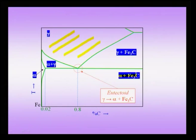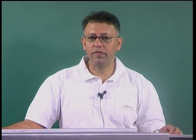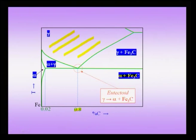Although alpha BCC is not as ductile as gamma FCC, alpha is still much more ductile than Fe3C. A eutectoid composition of 0.8 percent carbon produces 0.025 percent carbon alpha and 6.67 percent carbon Fe3C. This is the important eutectoid reaction in the phase diagram.